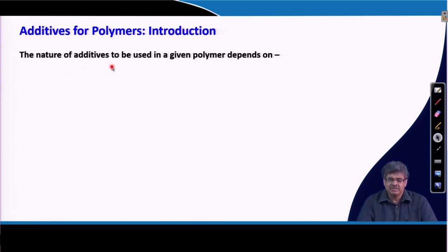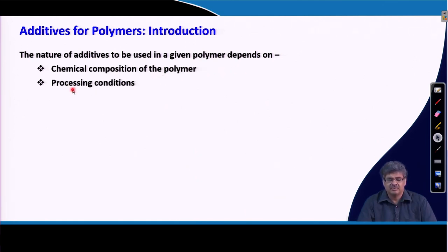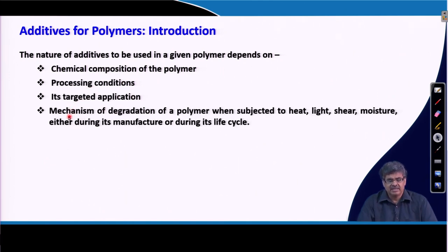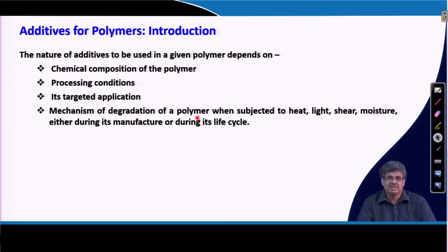The nature of additives to be used in a given polymer system depends on various factors like chemical composition of the polymer, processing conditions, and target application. When talking about stabilizers, the mechanism of degradation of a polymer needs to be understood when the polymer is subject to heat, light, shear, or moisture during manufacturing and its entire life cycle. Unless we understand the mechanism of degradation, we will not be able to identify or design additives to prevent it.